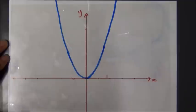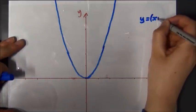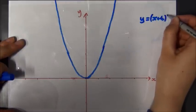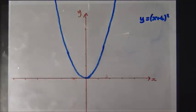Okay, so what happens then if I had, for example, y equals x plus 4 all squared? Well, your first instinct might be to think that that's going to move to the right because I'm adding something to the x value.